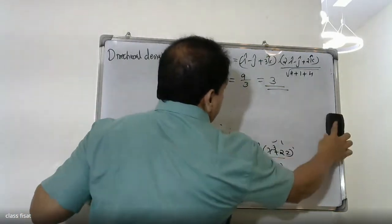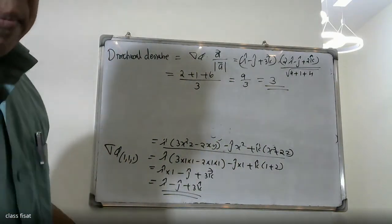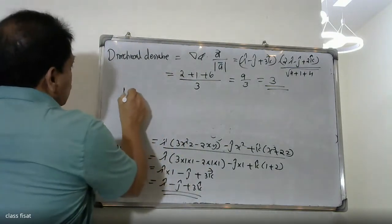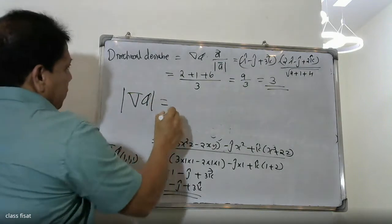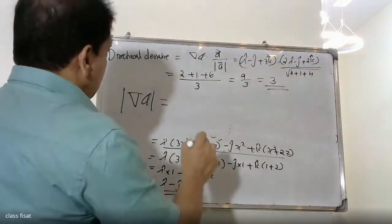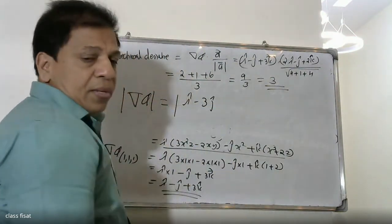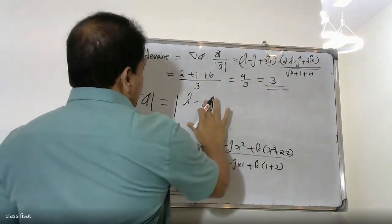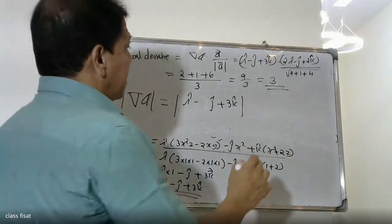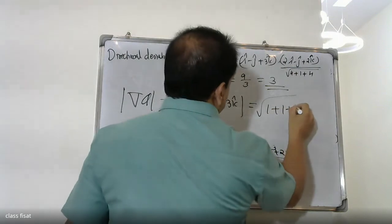Also find the maximum directional derivative. The maximum directional derivative is equal to the modulus of del φ, which is the modulus of (i - j + 3k). The modulus equals √(1 + 1 + 9) = √11.